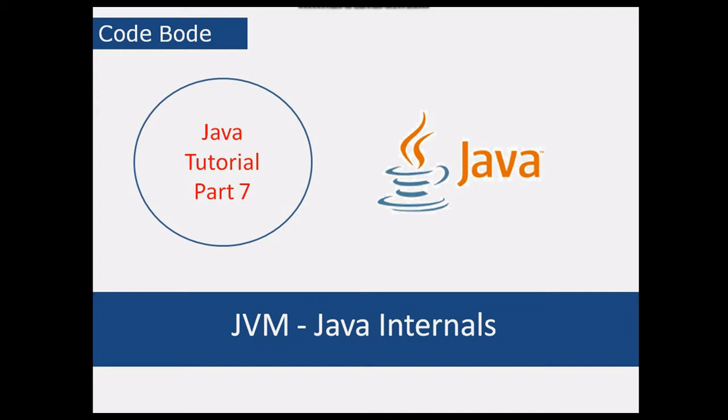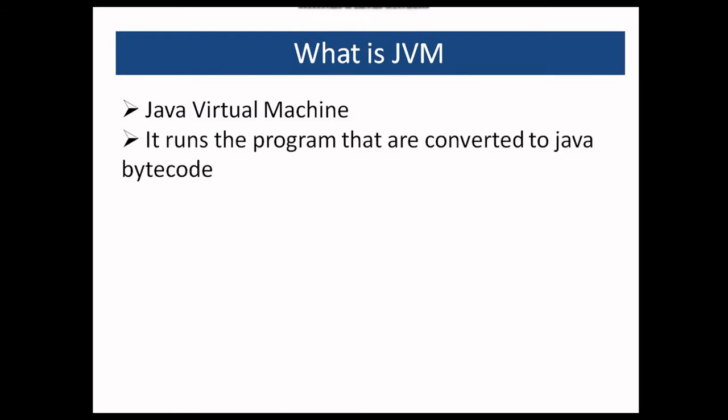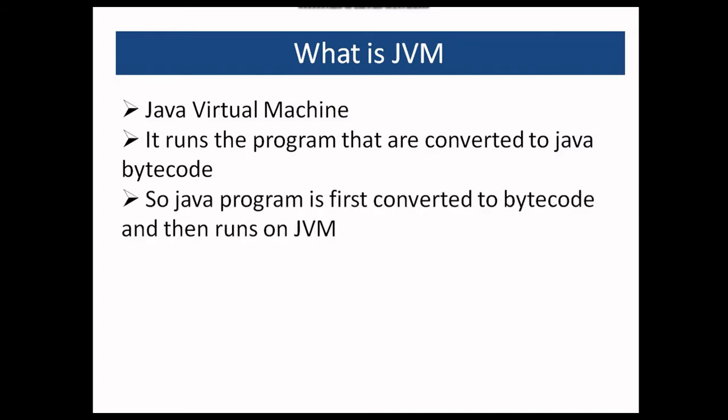JVM stands for Java Virtual Machine. It is responsible for executing code which are in Java bytecode format. Java code is first converted to bytecode before being executed on JVM. Code from other languages can also be converted to Java bytecode and can run on JVM. Bytecode is basically the format needed by JVM.